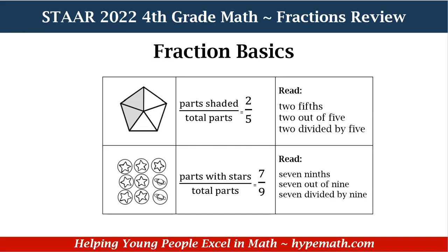Let's look at the bottom. We have nine circles with different shapes and objects inside of it. So our denominator, which is our total parts, is nine. And we're looking for the number of stars, which is seven. We have seven stars, so our fraction is seven-ninths. And it can be read as seven-ninths, seven out of nine, or seven divided by nine.